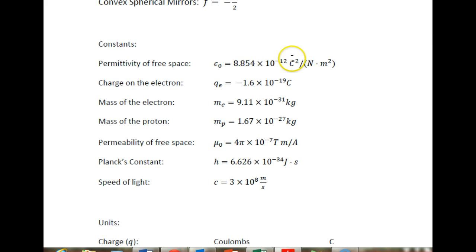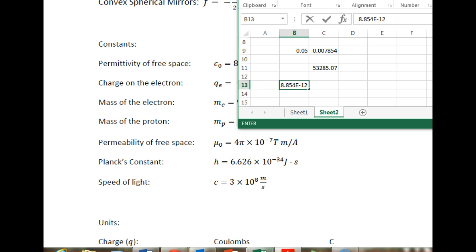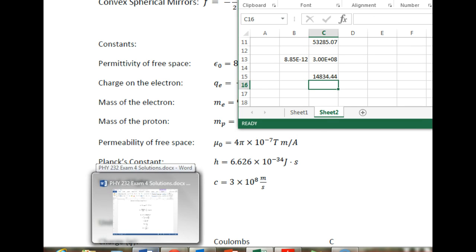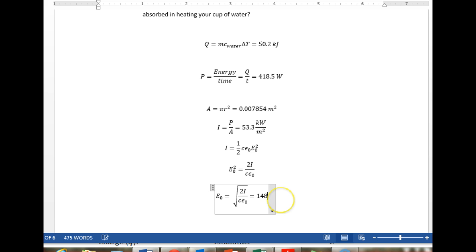So epsilon naught, 8.854 times 10 to the minus 12th. And those units, Coulomb squared per Newton meter squared. So we have the speed of light, 3 times 10 to the eighth. We have the intensity right here. And so what we're looking for is the square root of 2 times the intensity divided by the speed of light and divided by epsilon naught. And we get 14.834, and that's going to be volts per meter, 14.834 volts per meter. We could also write that 14.834 newtons per coulomb. Those are the two major units we use for electric field.